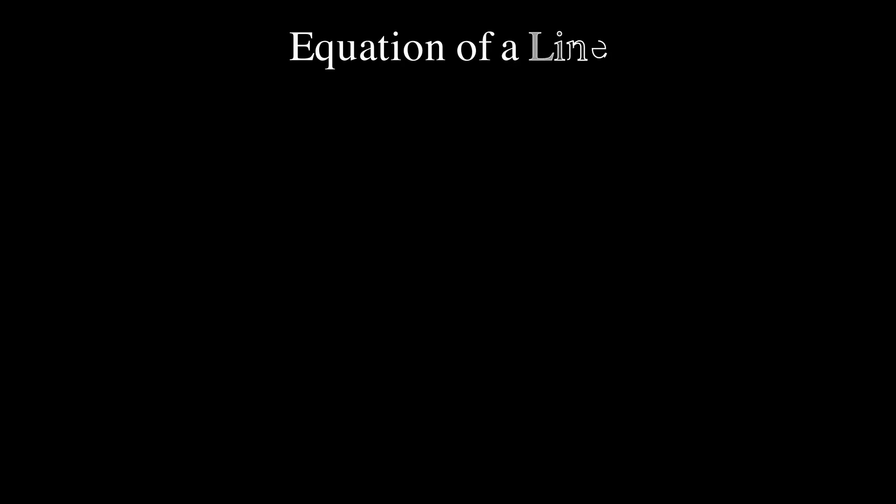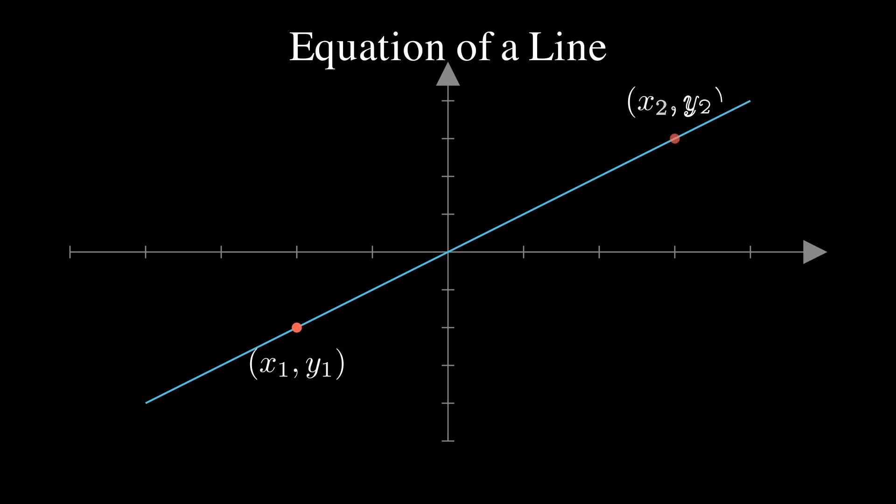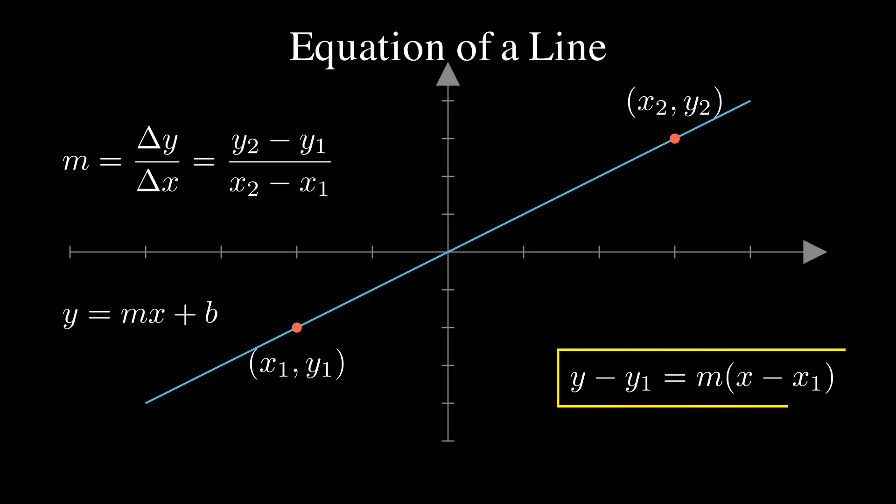Next up, we're going to give a quick refresh here on the equation of a line. So given two points (x1, y1) and (x2, y2), we can remember the slope of a line m is defined as the following. And we have our formula y = mx + b. However, in calculus, this other form called point-slope form is more important and useful to use.